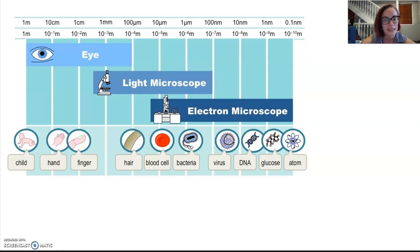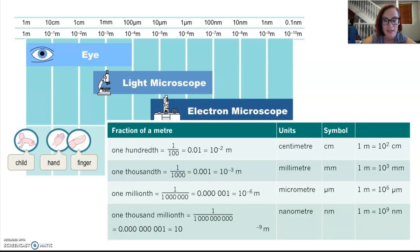Being able to see increasingly small objects means that we needed new scales of measurement, and here are some of them. We are used to centimeters and millimeters, but this one here is a micrometer or a micrometre, you sometimes hear it called, and these ones are nanometers. There are a thousand micrometers in a millimeter and a thousand nanometers in a micrometer.